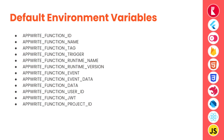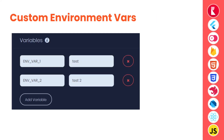AppWrite function data is custom execution data available if you triggered your function via HTTP request or from the console; you can pass custom data accessible inside the function as AppWrite function data. AppWrite function user ID is only available if triggered via HTTP request by a user with an active session from the client SDK — it will be the ID of that user. AppWrite function JWT is the JWT of the user that executed the function, so you can perform actions on behalf of that user. Finally, project ID is the unique ID of the project executing the function. Apart from these defaults, you can pass custom environment variables from the function settings as key-value pairs.